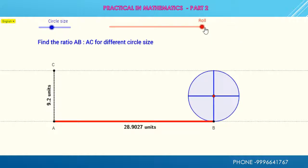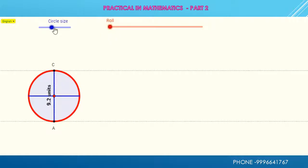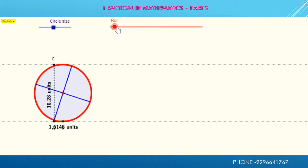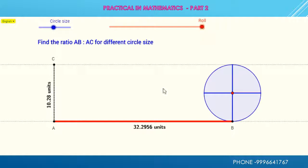First of all, I fold this circle and now increase the size of diameter. Again unfold the circle. Here I have the length of AB as 32.2956. This is the perimeter of circle.